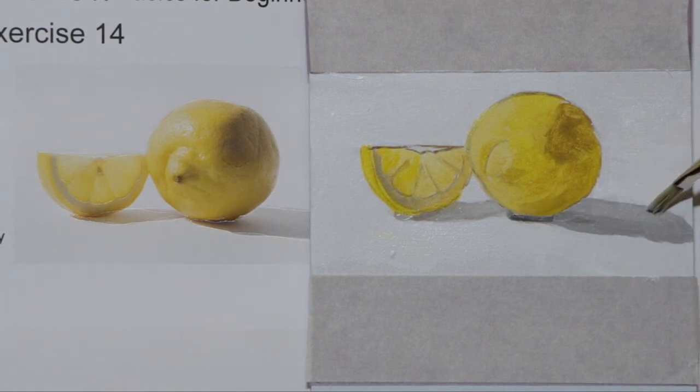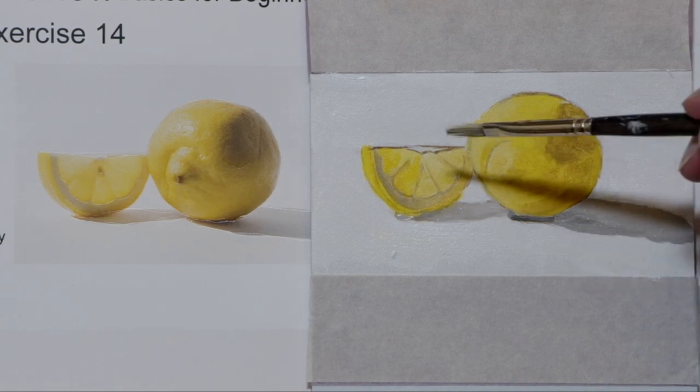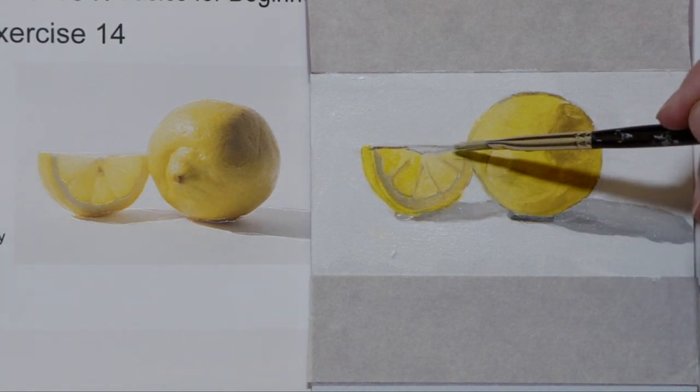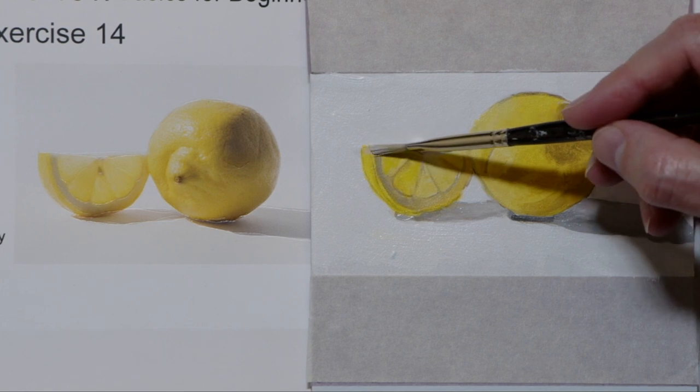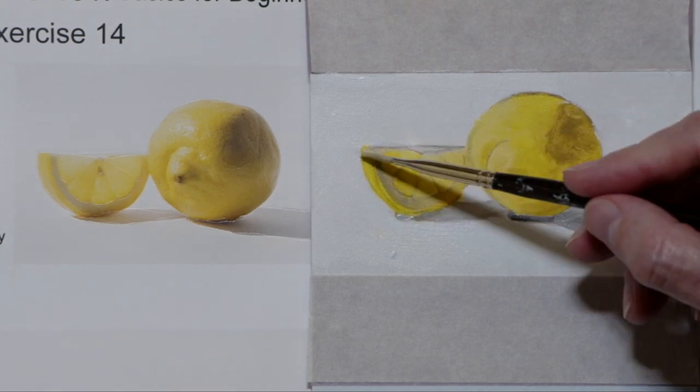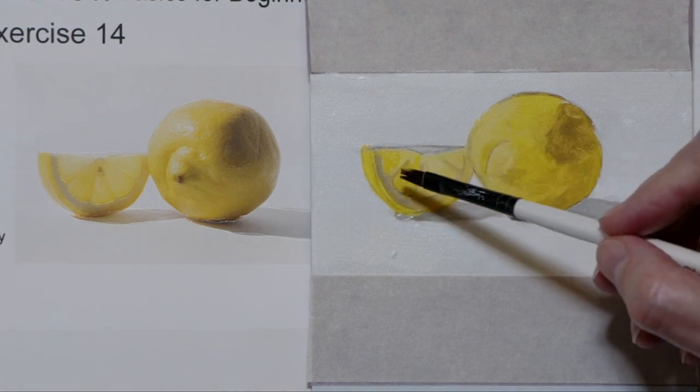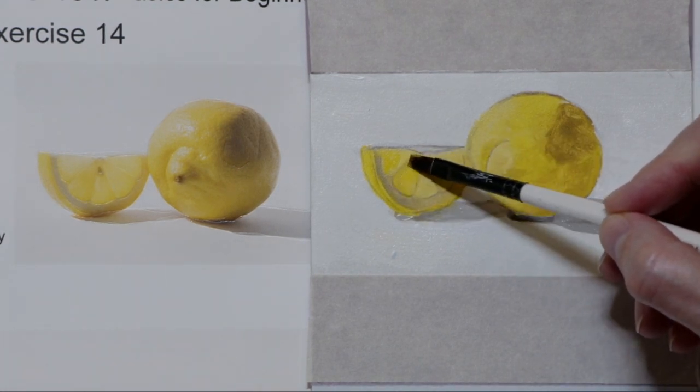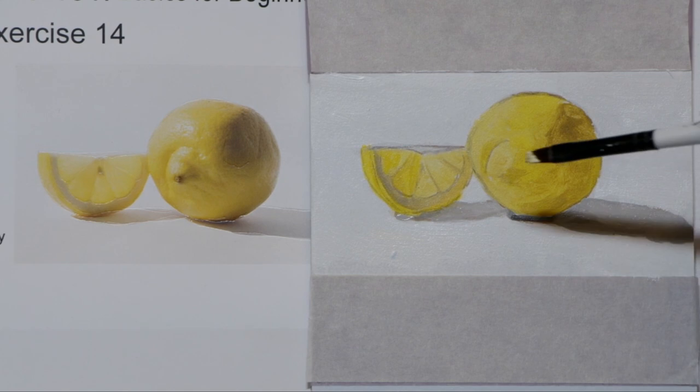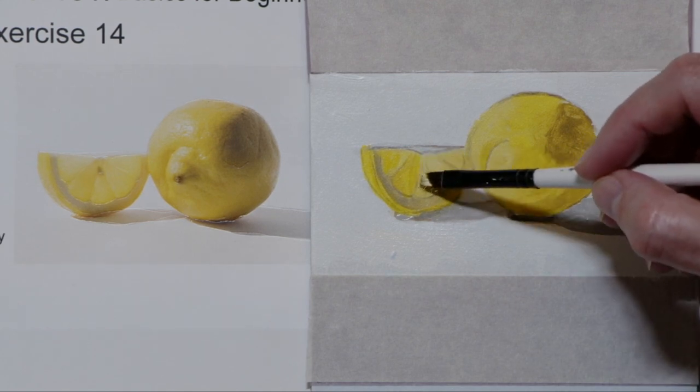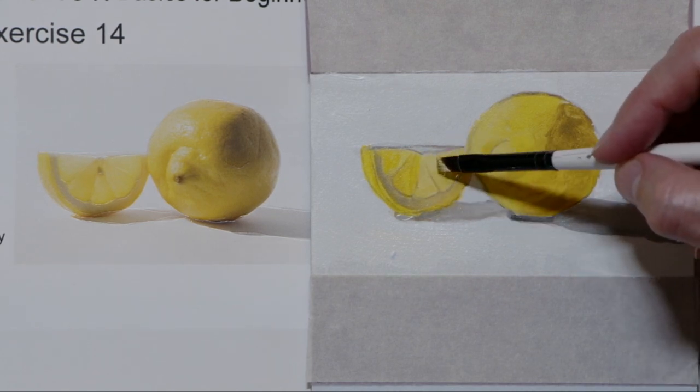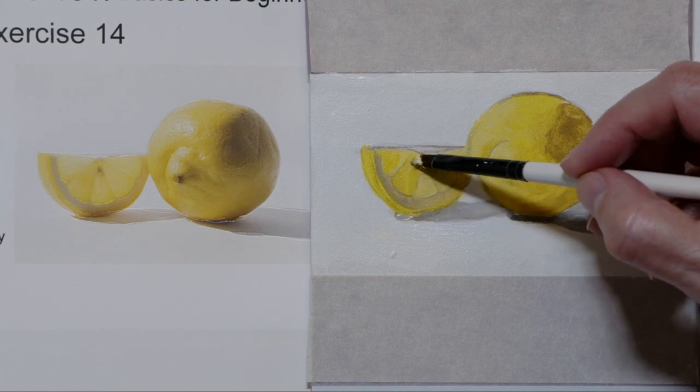And I'm lightening this area up because I've stood back and went oh that seems too dark. Let's get across the top of the lemon slice. I generally use the Robert Simmons Simply Simmons brush to soften edges and so forth. But I had a little paint on here and worked with it that way too.